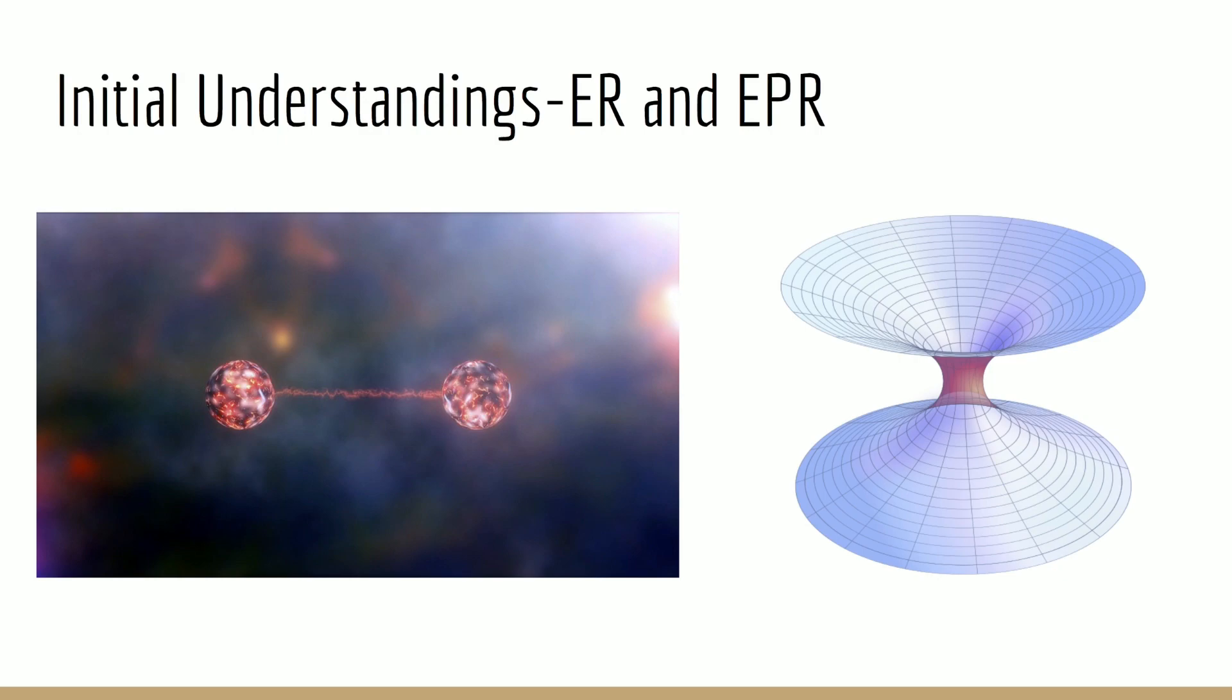This EPR paradox specifically states that when you have two entangled particles and you separate them very far away, if you measure the state of one of the particles, then you automatically get some information about the other particle. Let's explore this in further detail.